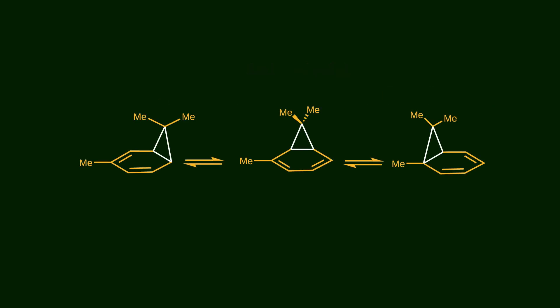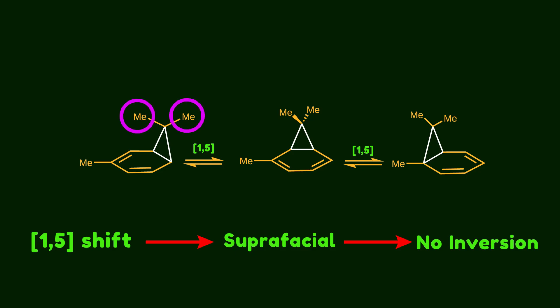Now let's go back to our case. You know that the cyclopropane ring walks through the six-membered ring by a 1-5 sigmatropic rearrangement. From orbital rules, it's clear that 1-5 migration is suprafacial, meaning no inversion of stereochemistry occurs in the migrating group. In our case, both substituents on the cyclopropane are methyl groups. But what if they are different? Based on the rules, we expect that the stereochemistry of the migrating group remains unchanged.